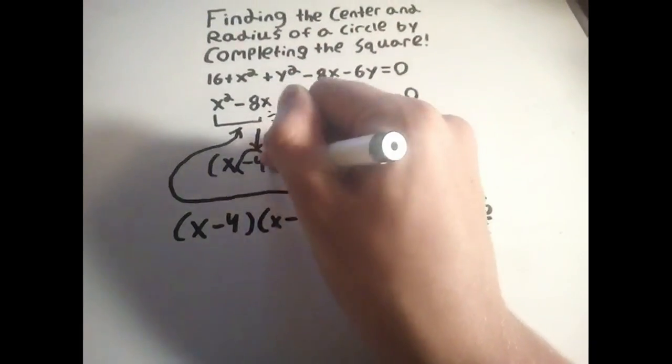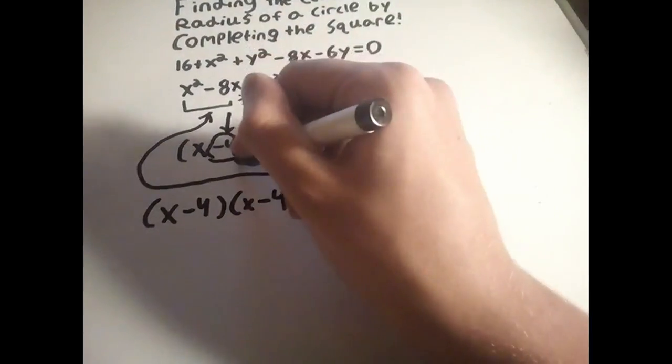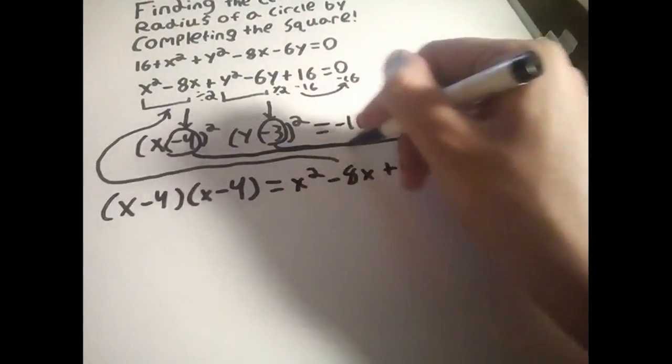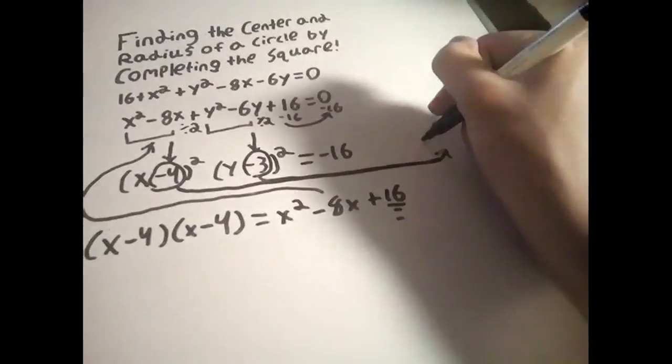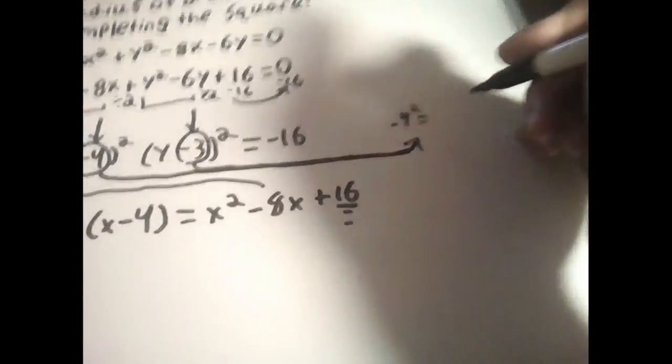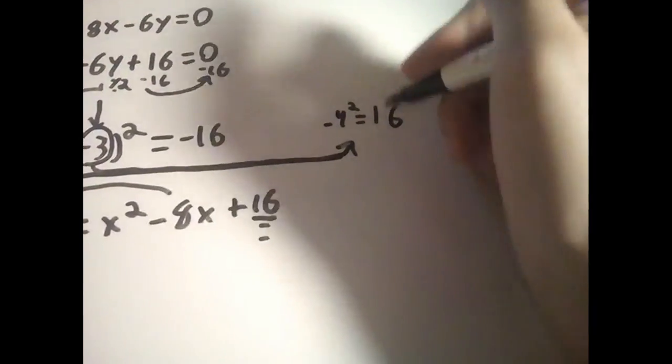Which leads us to the next step. Once we get the variables in the form of h and k, we can take the constant inside the parentheses and square them. After this, move them over to the constant side. Be careful not to flip their signs, just move them over.